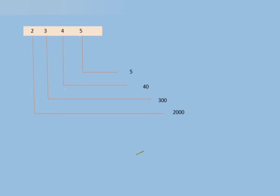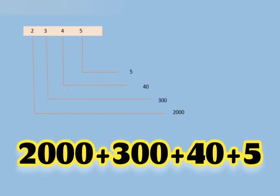Now we have 2345. As you know, 2 is on the 1000's place, 3 is on the 100's place, 4 is on the 10's place, and 5 is on the 1's place.